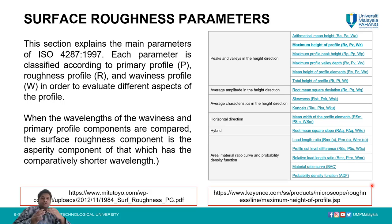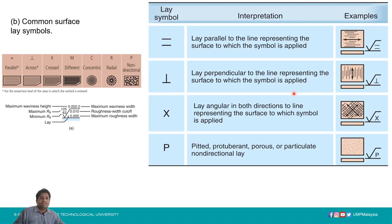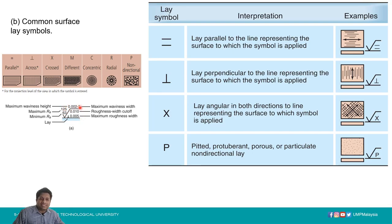Now we need to understand how to write symbols on technical drawings and how to express surface roughness parameters. Surface roughness symbols on technical drawings use a check-mark style symbol. Below this check mark on the right-hand side are the roughness width cutoff and maximum roughness. The Ra limits are placed on the left-hand side of the check marks.